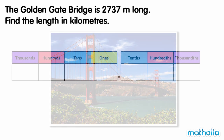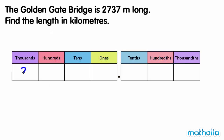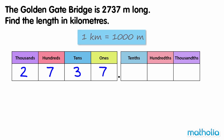Let's write the distance in a place value chart. In one kilometre there are 1000 metres, so to convert from metres to kilometres we need to divide by 1000. We can divide by 1000 by shifting the digits in the place value chart three places to the right.